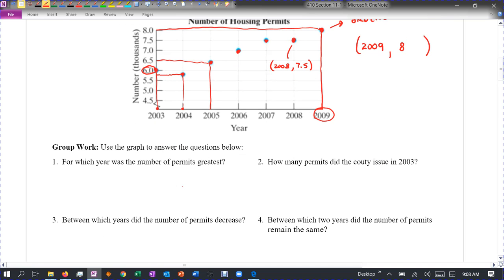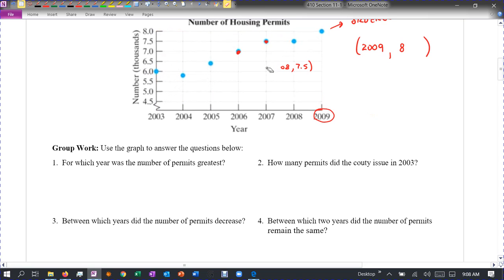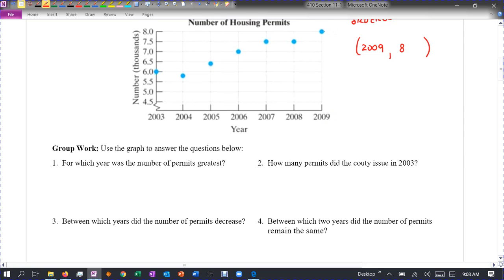Now, let's answer some questions first before we move on and get into ordered pairs a little bit more. Let's answer some of these questions. For which year was the number of permits the greatest? So what we're looking for is the highest point on this chart. Let me get rid of all my stuff here. It's just distracting. Okay. The highest number on this chart happened in the year 2009. So we would say 2009.